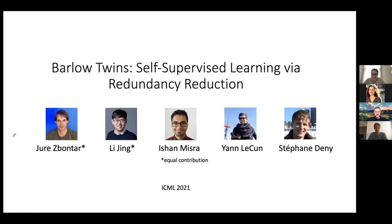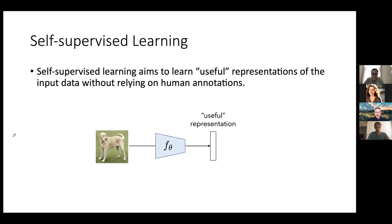Thank you for the introduction, and also thank you for inviting me. I'm really happy to be here. Before I start the presentation, let me mention the collaborators who worked with me on this project: Li Jing, Ishan Nisra, Jan Nekun, and Stefan Denik — all from Facebook AI Research. So let me get started. It's okay if you have questions to just interrupt me during the talk; it's probably easier for me this way. So Barlow Twins is a method for self-supervised learning, and before I actually talk about Barlow Twins, I want to spend a few slides talking about self-supervised learning in general.